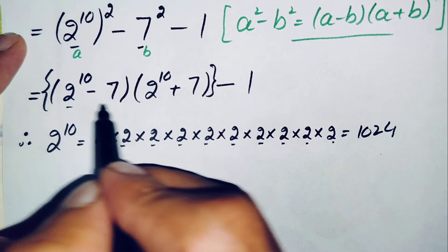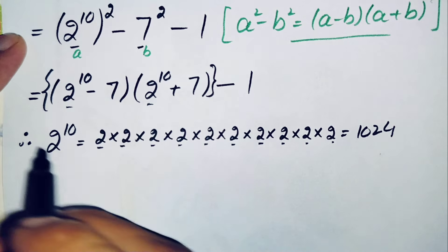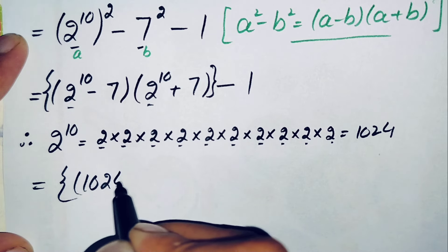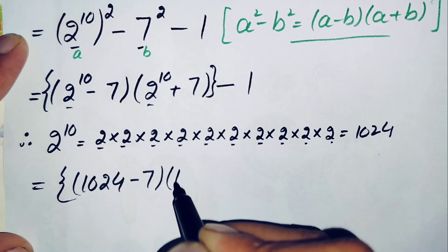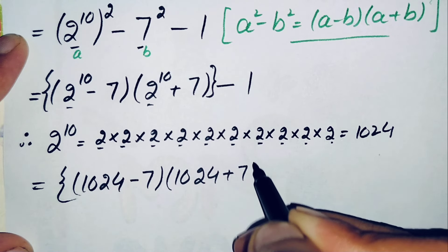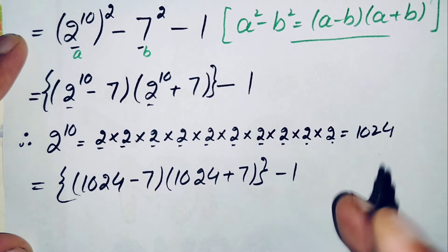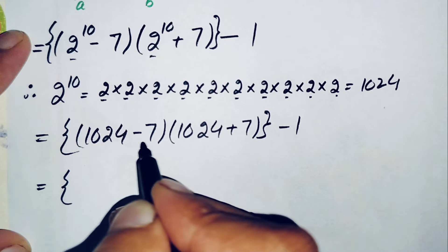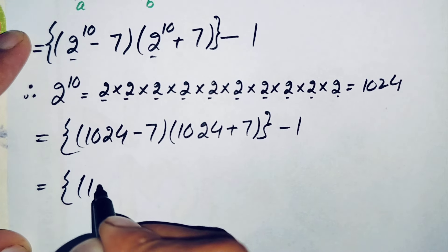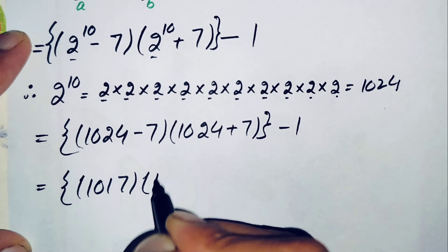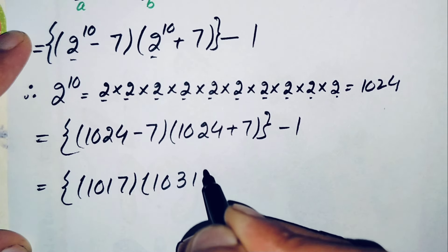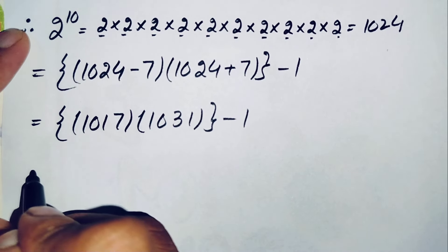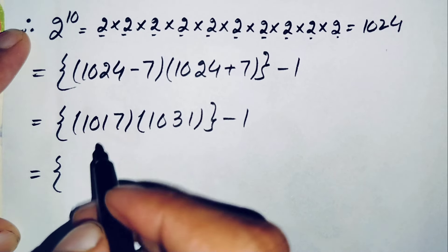We replace 2 raised to power 10 with 1024. The expression becomes 1024 minus 7, times 1024 plus 7, minus 1. Calculating: 1024 minus 7 gives 1017, and 1024 plus 7 gives 1031. So we have 1017 times 1031, minus 1.